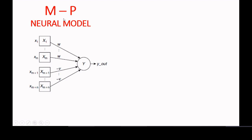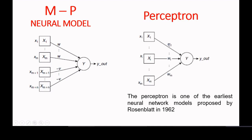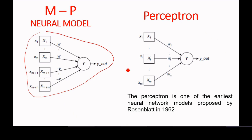We will see the perceptron. This is the McCulloch-Pitts neural model, also simply called the MP neural model. The perceptron neural model was proposed by Rosenblatt in 1962. On the left-hand side we are seeing the McCulloch-Pitts neural model, and this is the perceptron. Can anyone tell the difference between the McCulloch-Pitts neural model and the perceptron by simply observing the two structures?